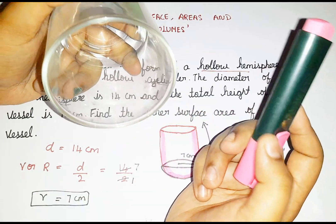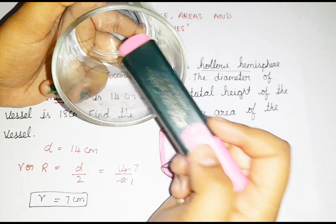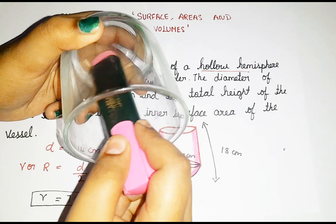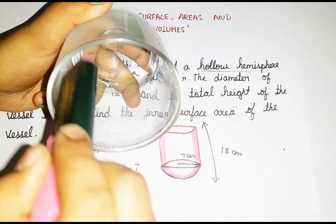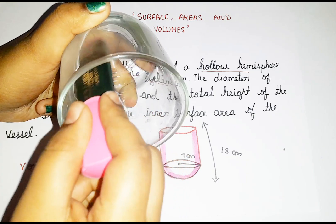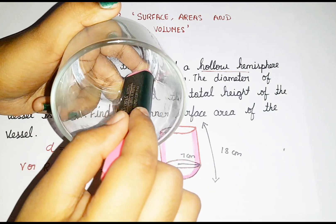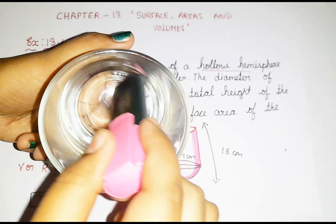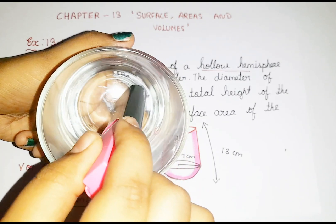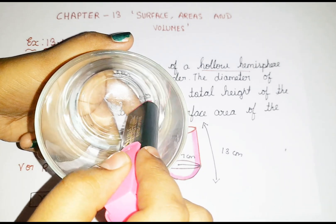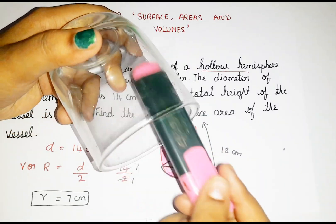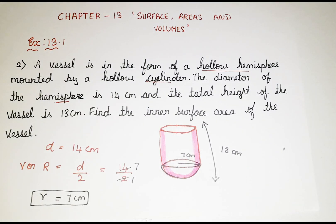They mention inner surface area, which includes cylinder as well as hemisphere. So since I am painting curved surface for both shapes — the cylinder as well as the hemisphere — I am going to take the curved surface area of the hemisphere plus the curved surface area of the cylinder.